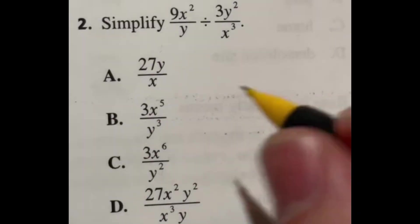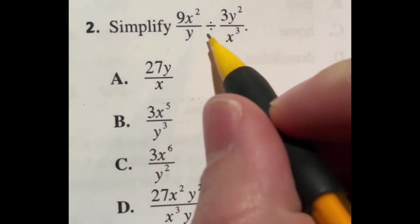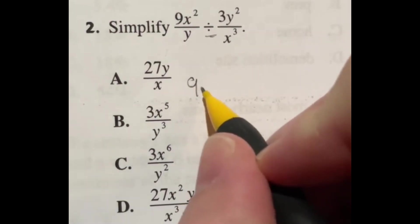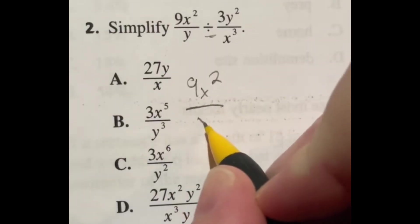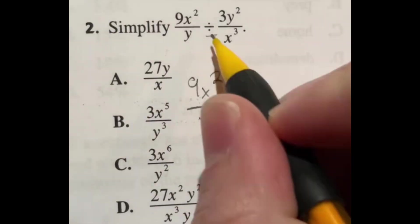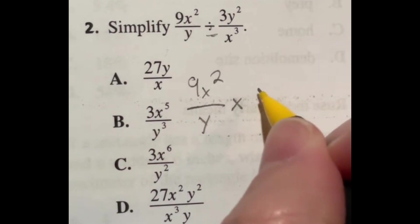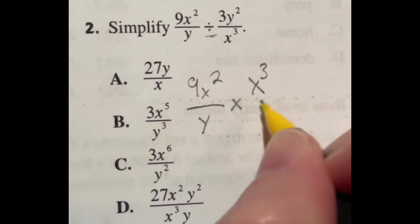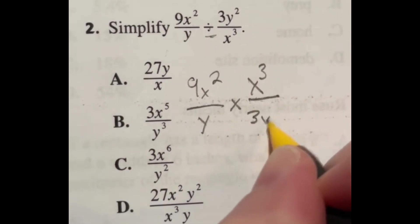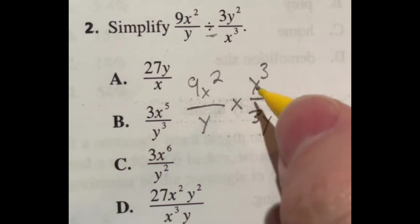I'll tell you what, I love me some good algebra rules. And looking here, if you didn't know, whenever you're dividing two fractions, instead of dividing, you can actually just multiply them. And when you switch from division to multiplying, you just flip that second fraction upside down. So I'm going to put that x to the 3rd over 3y squared. Now, looking at this, if you didn't know,